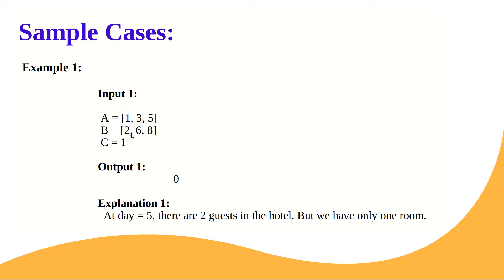The first booking comes at 1 and ends at 2 — we have one room and allocate it. After day 2 the room gets empty. The second booking comes at 3 and ends at 6, so from 3 to 6 the room is occupied. The third booking comes at day 5, which overlaps with the second booking's interval, so it cannot be accommodated. We return 0 because at day 5 there are two guests but only one room.